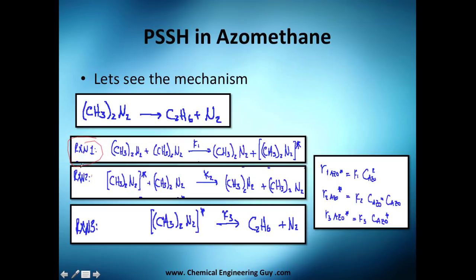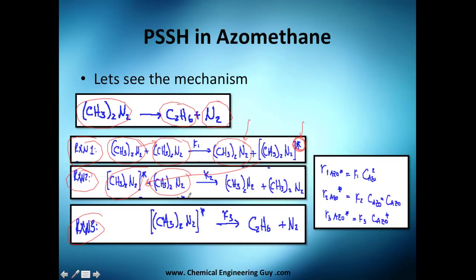The mechanism has three reactions. First, azomethane breaks down into ethane and nitrogen gas. One molecule collides with another molecule of itself — one gains energy and becomes an active intermediate, while the other stays in its normal state. Then this excited intermediate collides again with a normal azomethane molecule, and now they are ready to react.